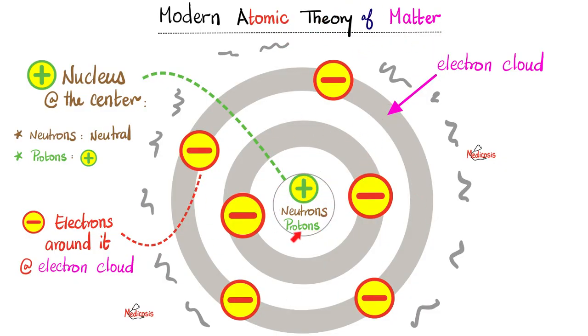Here is a very simplistic form of an atom. In the center there is the nucleus, which has neutrons, neutral, and protons. The protons are positively charged. All of that's in the nucleus. Around the nucleus we have negatively charged electrons.